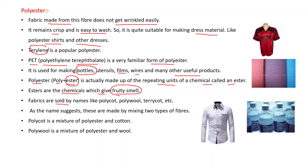Fabrics are sold by names like polycot, polywool, terrykot, etc. These are some varieties of polyester. As the name suggests, these are made by mixing two types of fibers. Polycot is a mixture of polyester and cotton; polywool is a mixture of polyester and wool. You can see diagrams of objects made from polyester — bottles and shirts.